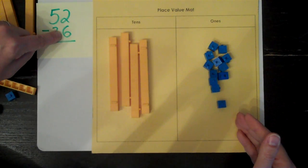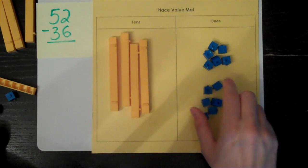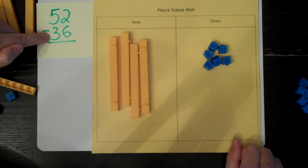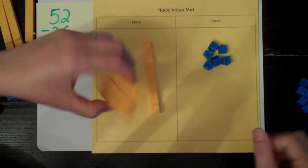Now, I can take away the six ones. One, two, three, four, five, six. Completely off the mat. And, I can take away three tens. One, two, three. Completely off my mat.